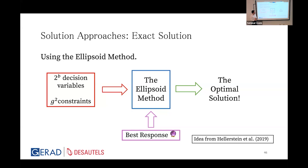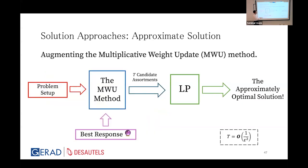Instead, we go after an approximate solution using the multiplicative weight update method. The original LP had 2^B decision variables. We feed the problem setup and the best response oracle to MWU, which limits the candidate assortments to T — on the order of 1/ε² where ε is the additive approximation guarantee. We then run the LP on those T assortments.